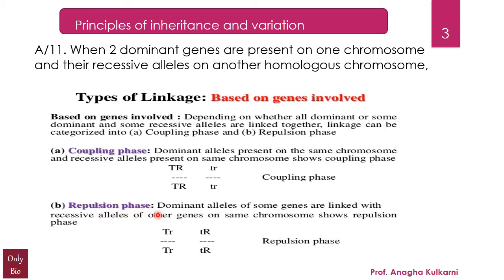In the repulsion phase, dominant alleles of some genes are linked with recessive alleles of other genes on the same chromosome. For example, capital T (dominant) and small r (recessive) are on one chromosome, while its homologous chromosome carries small t and capital R — one recessive, one dominant. This is what is meant by coupling and repulsion. Hope you have got this.